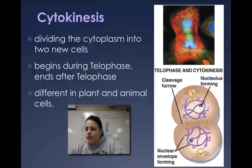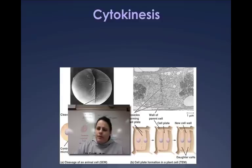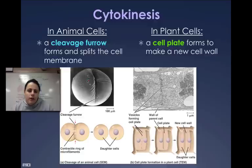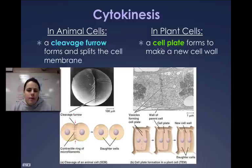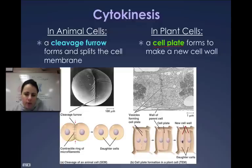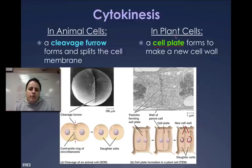This is on the next page under cytokinesis. Plant cells have a cell wall, so the process is different. In animal cells, there's no cell wall, so they simply form a cleavage furrow — the cell pinches inward, splitting the cell membrane all the way through. In plant cells, you have both a cell membrane and a cell wall, so you have to build a new cell wall. While it's being built, it's called the cell plate, which gets thicker and thicker until it separates both new cells with their two new nuclei.